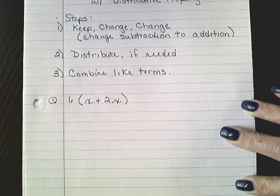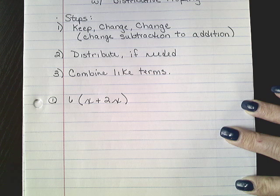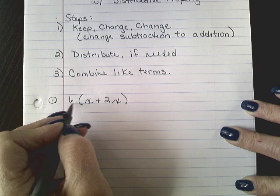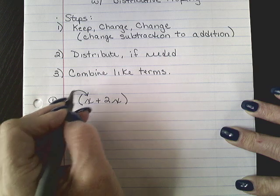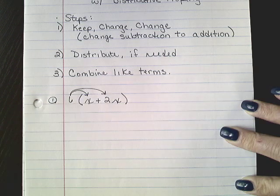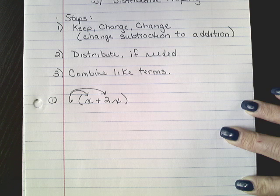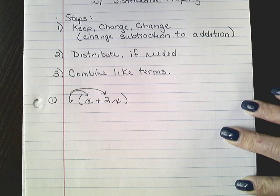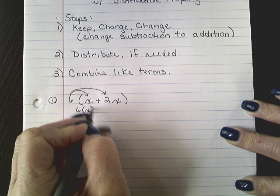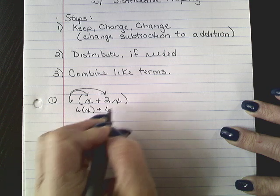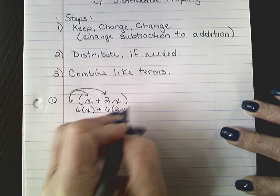All right, so we talked about the distributive property when we talked about the properties of mathematics. We always take that term that's outside the parentheses and we multiply it by everything inside the parentheses. Now, I like to draw my arrows so I don't forget that I have to distribute that six to every other term inside that factor. So six, that would be times x plus six times 2x.